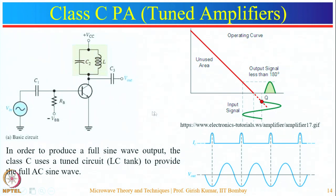In standalone configuration these pulses are not very useful, but when an LC tank circuit is connected at the collector, the short-duration pulses have very high frequency. The inductor offers high impedance at high frequency and acts like an open circuit, while the capacitor provides low impedance and starts charging up to V_CC. The capacitor then discharges through the inductor, and this charge-discharge cycle continues to generate a complete sinusoidal waveform. This is a key application of class C amplifiers.